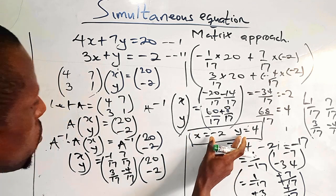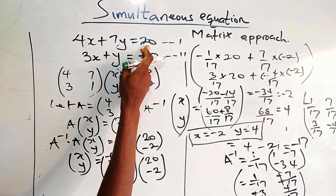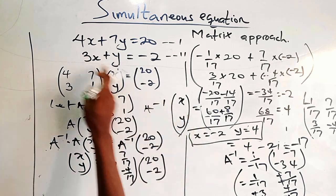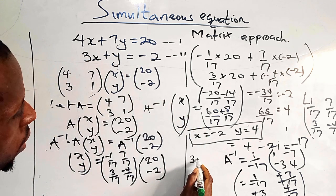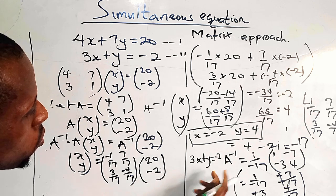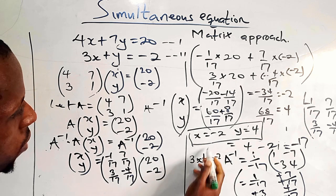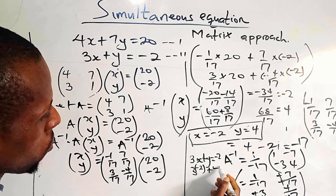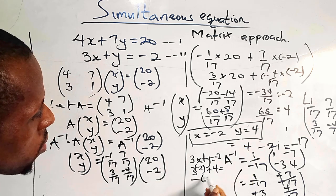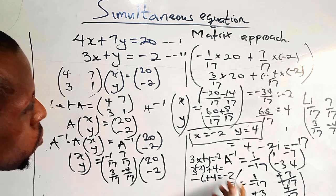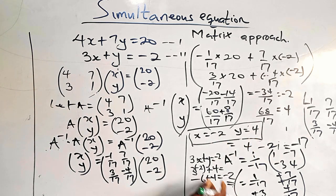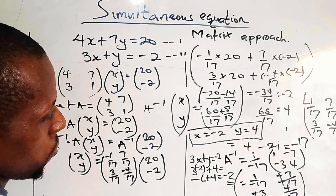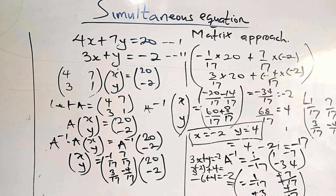When you take these values and substitute back into any of the equations it must equate correctly. Let us verify with equation 2: 3x plus y equals minus 2. Substituting x equals minus 2 and y equals 4, we have minus 2 times 3 plus 4, which is minus 6 plus 4 equals minus 2. That means the values of x and y are correct. You can also check this in equation 1 to see whether you get 20, and drop your observation in the comment section. Thank you very much.